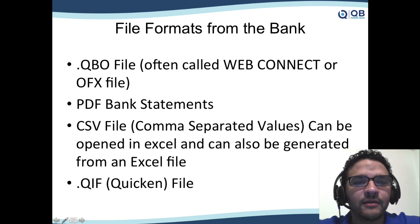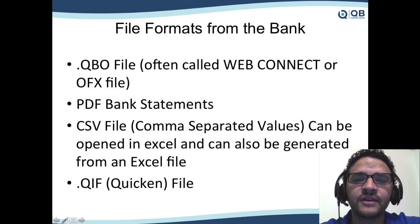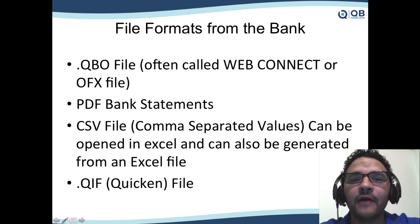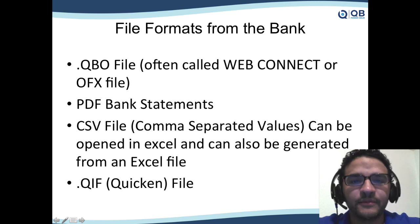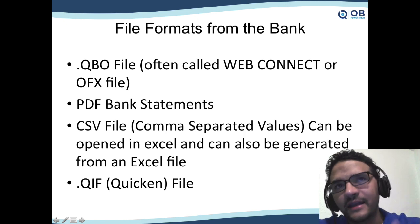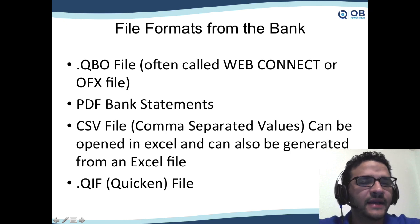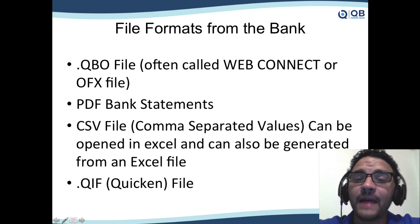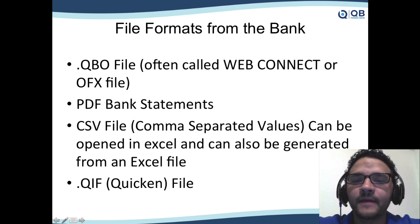Sometimes the bank will allow you to download transactions in CSV format — CSV means comma-separated values — which is how you can download the data as text, open it in Excel, make changes, and then use a tool to go from CSV to .qbo. Sometimes the bank allows you to download into .qif format, which is the legacy Quicken format. The same tool I use can also convert .qif files.